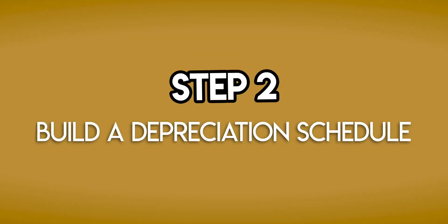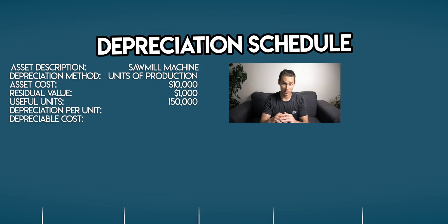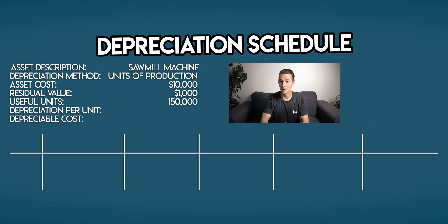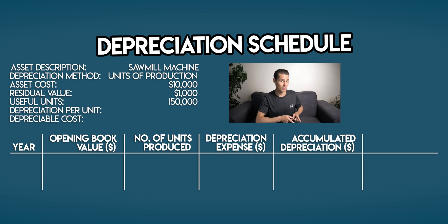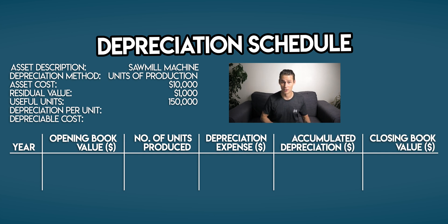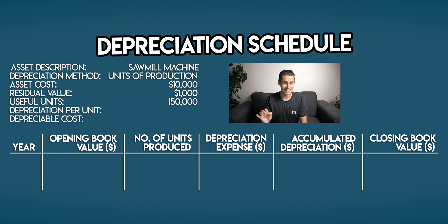Step 2: Build a depreciation schedule. A depreciation schedule is a table, and in the units of production method it has six columns: year, opening book value, number of units produced, depreciation expense, accumulated depreciation, and closing book value. The number of units produced is an extra column we include for the units of production method. We need to track this period by period to help us work out the depreciation expense.